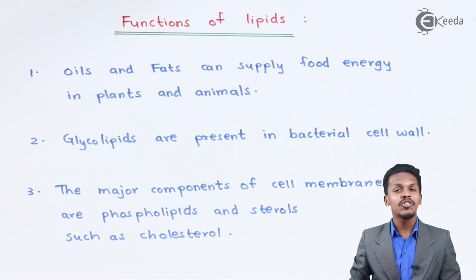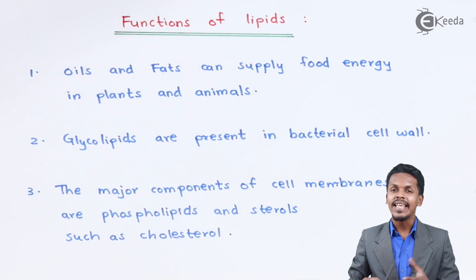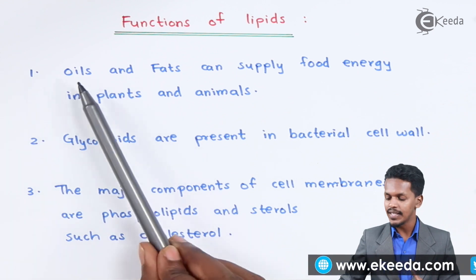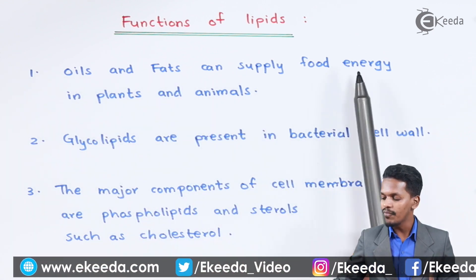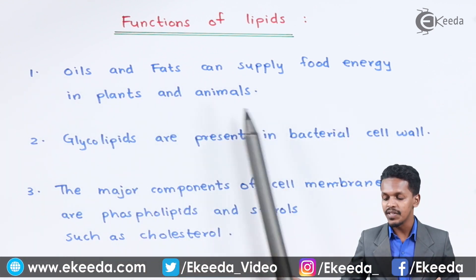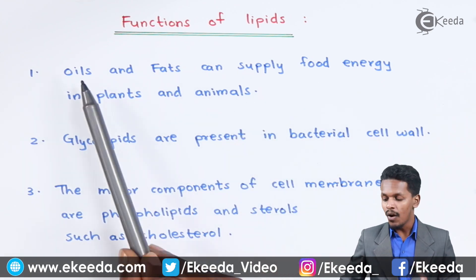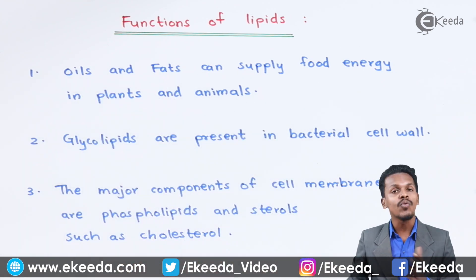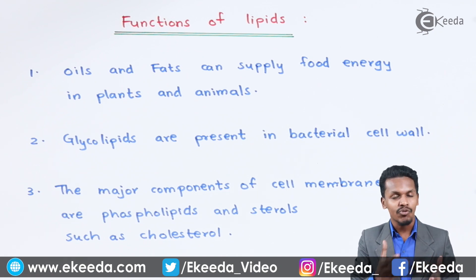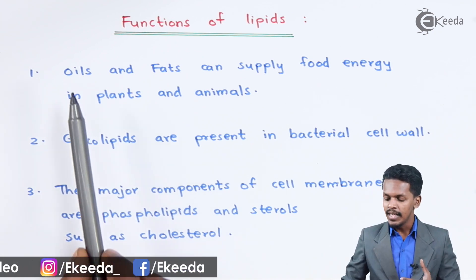In this topic I'm going to talk about the functions of lipids. The first one is that oils and fats can supply food energy in plants and animals. This is the main function of oils and fats. These are complex lipids and they can basically be in saturated form or unsaturated form.